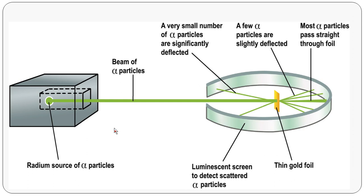Looking at the picture of the experiment: the source of alpha particles is radium. The beam is directed at a thin gold foil. What happens is that most of the alpha particles pass straight through in a straight line, some of the alpha particles are slightly deflected, and a very few alpha particles bounce back from their original path.